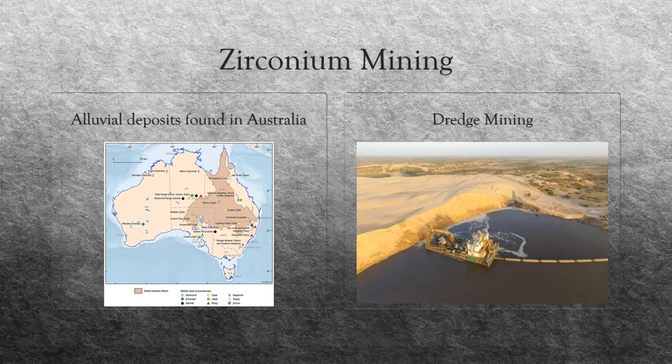Zircon is mined through two separate methods: dry or wet mining, sometimes called dredge mining. Dry mining processes are used for ores that are found in shallower areas or when ore is found alongside harder rock. Trucks, excavators, or other equipment is used to extract the ore and move it to further processing.